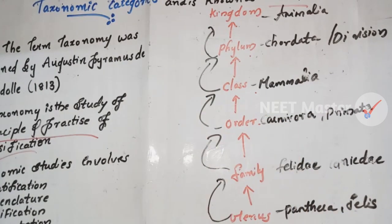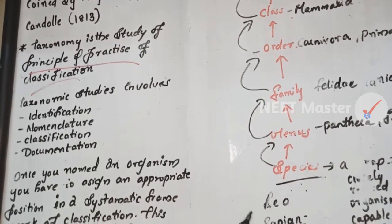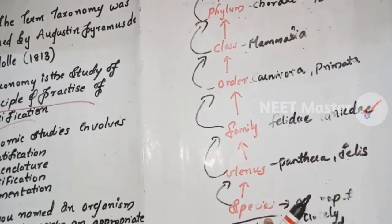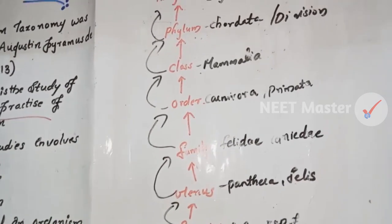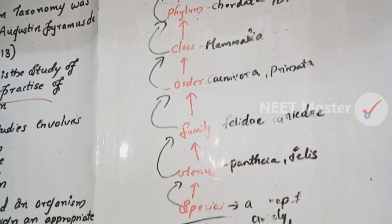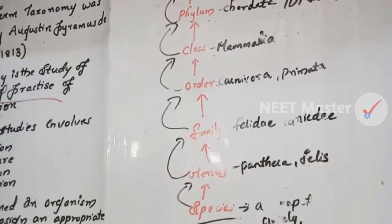So this is the different taxonomic hierarchy. Taxonomy was introduced by Pyramus de Candolle in 1813 as the principle and practice of classification, including identification, classification, and documentation. The taxonomic categories — Kingdom, Phylum, Class, Order, Family, Genus, Species — form the systematic framework. Thank you.